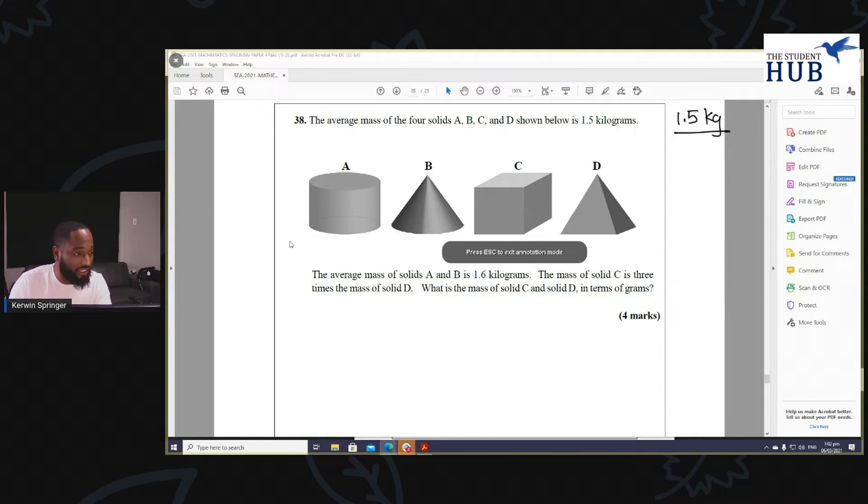The sum of all the masses is the mean multiplied by the number of solids we have here, so this is 1.5 multiplied by 4, which is 6.0 kilograms. So I have the sum of all the masses. Now there's a reason we are doing this, okay, so I have 6 kg.